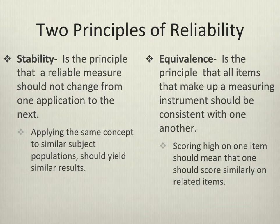The second principle of reliability deals with when you're using an index or a scale. It's the principle of equivalence. The principle of equivalence refers to the fact that when you create a survey instrument that's a scale, you need all of the items in the instrument to be consistent — they all need to be measuring the same thing.